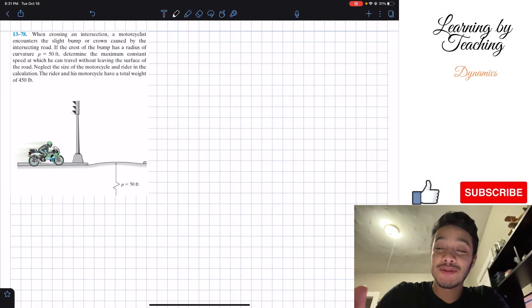Welcome back everyone to Learning by Teaching. Today we're in dynamics and we're going to solve problem 13.78. When crossing an intersection, a motorcyclist encounters a slight bump or crown caused by the intersecting road. If the crest of the bump has a radius of curvature ρ equals 50 feet, determine the maximum constant speed at which he can travel without leaving the surface of the road. Neglect the size of the motorcycle and rider in the calculation.